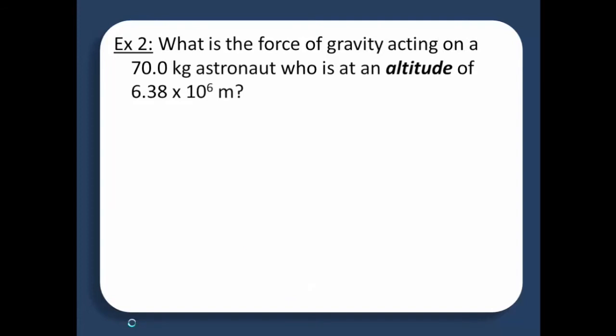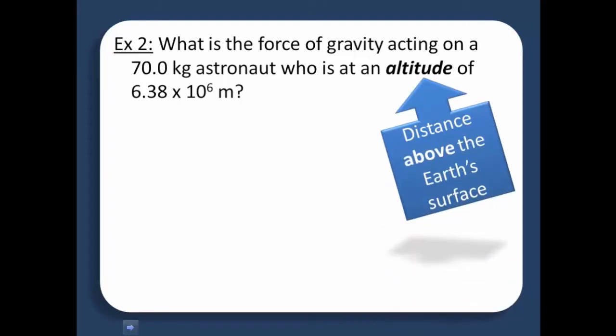That is the most straightforward question. Let's take a look at another one that's a little more difficult. What is the force of gravity acting on a 70 kilogram astronaut who is at an altitude of 6.38 times 10 to the 6 meters? Now, one thing we need to realize is this word altitude means the distance above the Earth's surface. So, we're no longer standing on the Earth's surface. So if we go to draw this picture, we're sitting up here now, which means we're going to have this radius to deal with, but we're also going to have this altitude right here as well.